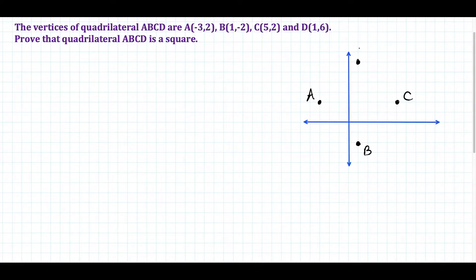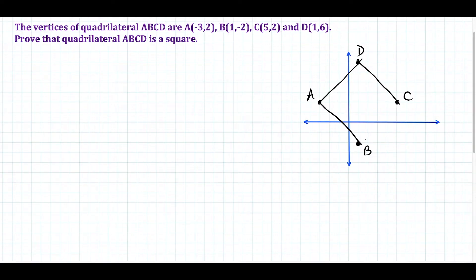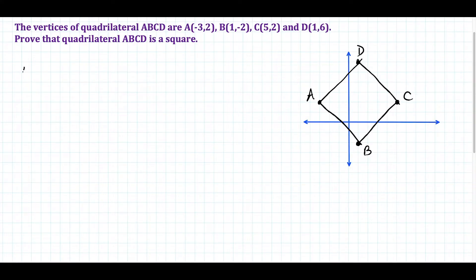Here are the four points. When we connect them, I'm already convinced that what we have here is a square, just the way this is taking shape. But remember, in math, if we're going to prove that something is a square, we have to be very thorough. So what we're going to do first is show that all four sides are equal in measure, and we're going to do that using the distance formula.